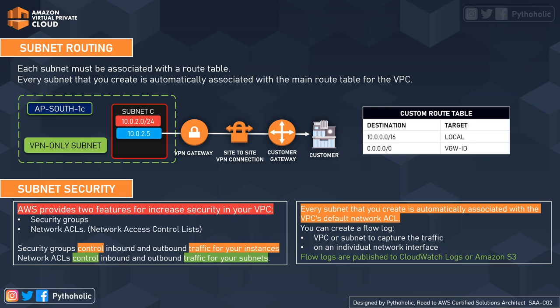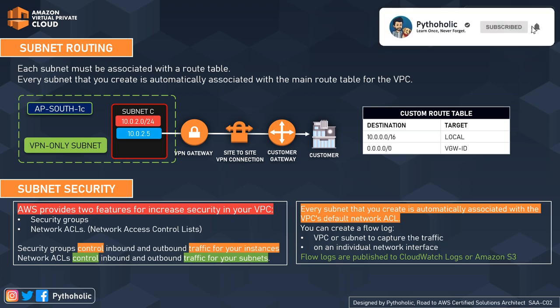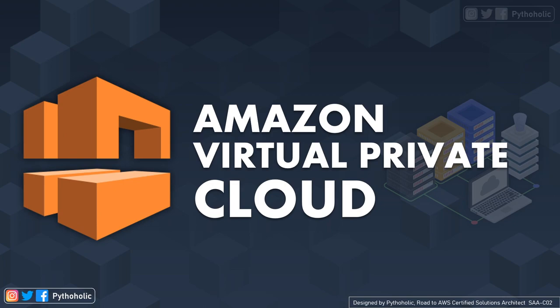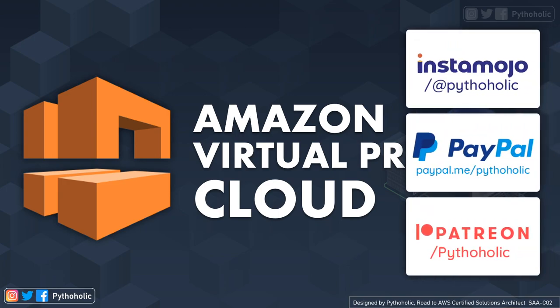For security, AWS provides two features in your VPC: security groups, which control inbound and outbound traffic for your instances, and network ACLs (Network Access Control Lists), which control inbound and outbound traffic for your subnets. Every subnet you create is automatically associated with the VPC's default network ACL. You can also create VPC flow logs from your VPC, subnet, or individual network interface to capture traffic, and publish them to CloudWatch Logs or AWS S3 for auditing or debugging. That's all for today's session — until next time, it's Pytholic signing off.